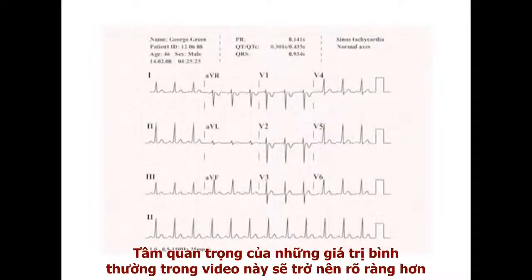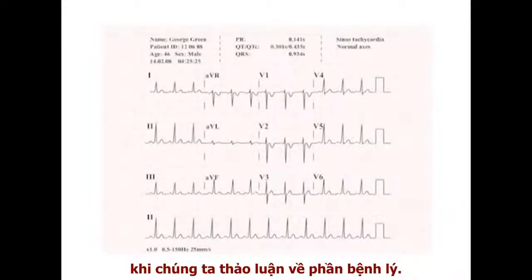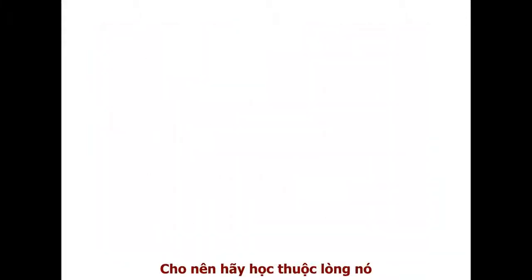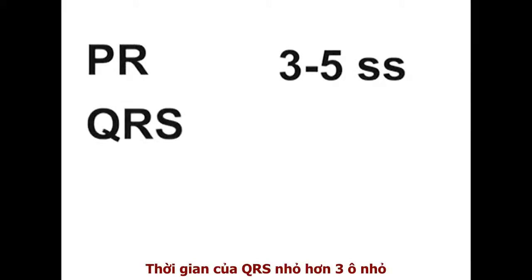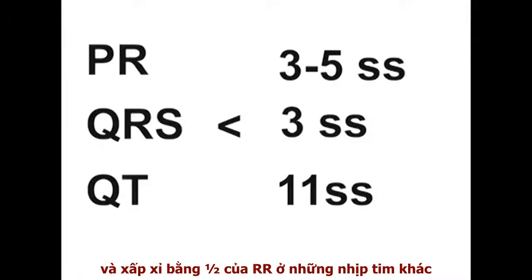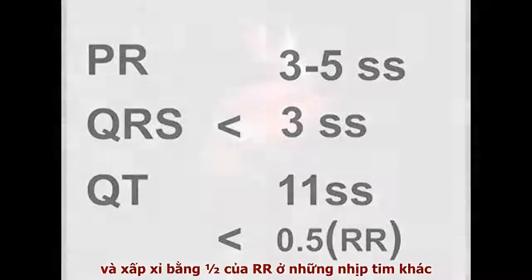The importance of the normal values outlined in this video will become increasingly obvious as we discuss the ECG in disease states. Memorise them: the PR interval, 3 to 5 small squares; the QRS complex duration, less than 3 small squares; and the QT interval, an upper limit of just over 11 small squares at a heart rate of 60 beats per minute, and approximately less than half the RR interval at other heart rates.